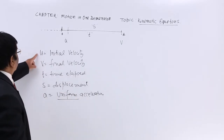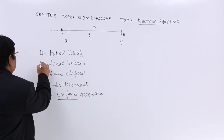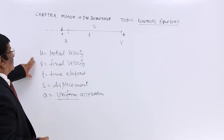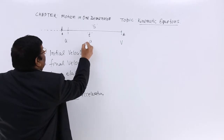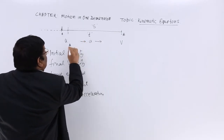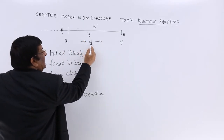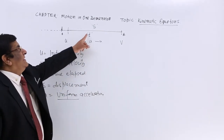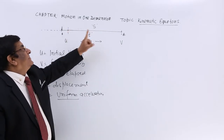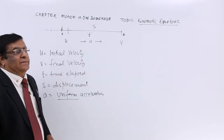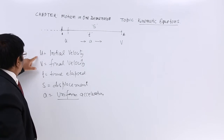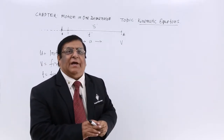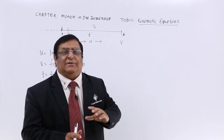So we have five quantities: V, U, T, S, and A. U changes due to acceleration A, so the velocity changes to V. The time taken is T and the displacement during this is S. These are the five quantities involved. This is accelerated motion and we have to find the relation between different quantities.